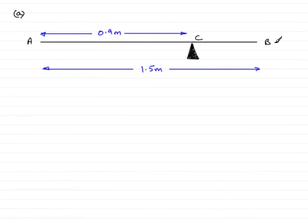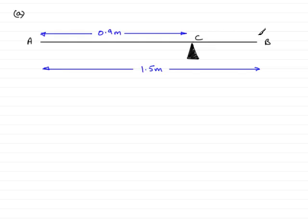I've made a copy of the diagram given in part A. We have a uniform rod AB on a support at C, 0.9 meters from end A. The rod is of length 1.5 meters — it's very important in questions like this that you draw a sketch. The remaining length C to B must make 1.5 meters total, so that's 0.6 meters.